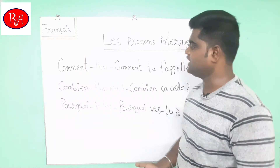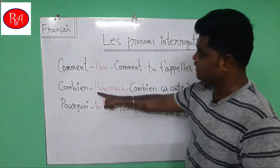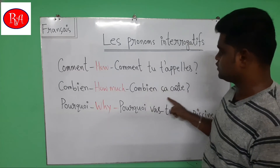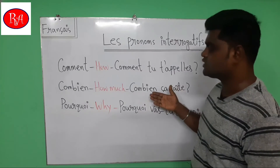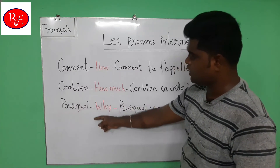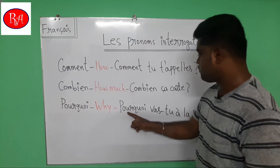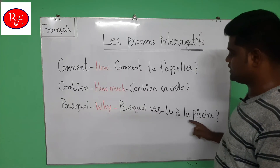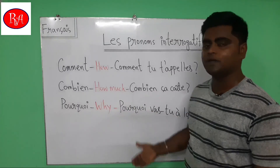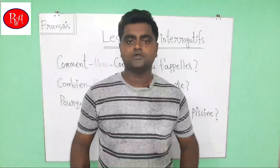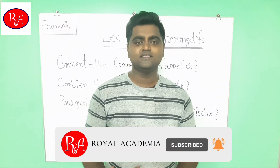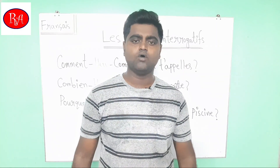Next word, 'Combien' — that means 'how much'. For example, 'Combien ça coûte?' — 'How much does it cost?' Next word, 'Pourquoi' — that means 'why'. For example, 'Pourquoi tu vas à la piscine?' — 'Why are you going to the swimming pool?' So here we end our lesson today. You certainly need to practice. That's all for today's video, thanks for watching.